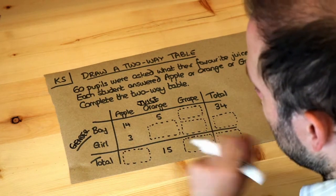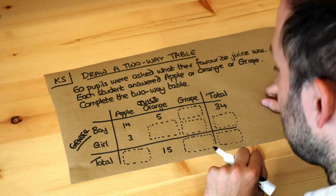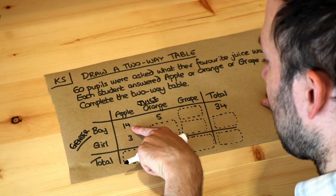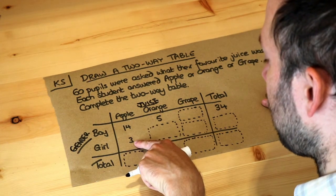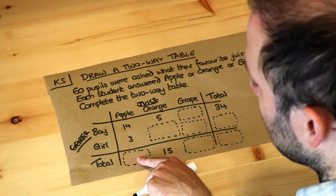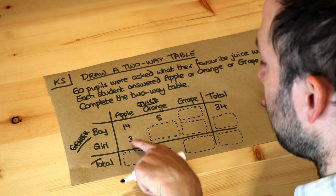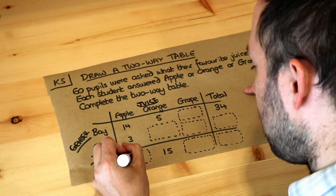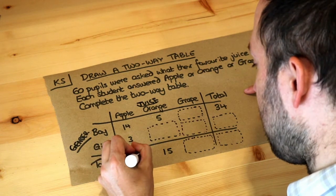We just need to do a bit of adding and subtracting. If there are 14 boys who like apple and 3 girls who like apple, then the total number of people who like apple is just 3 plus 14. So we can put 17 in there.